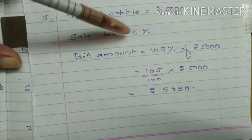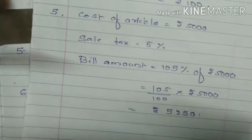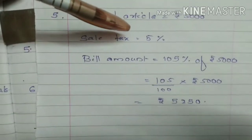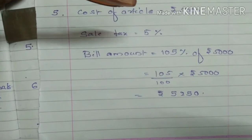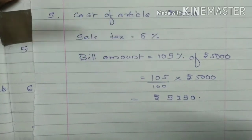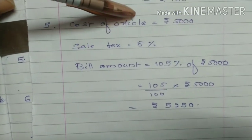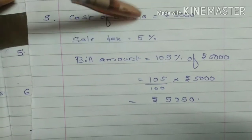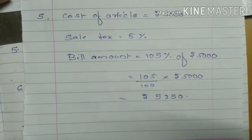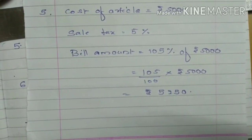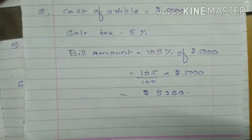Suppose if it is Rs. 100, we have to pay Rs. 105. That means Rs. 5 extra we have to pay for each Rs. 100. So 5% means Rs. 5 extra for each Rs. 100, and instead of Rs. 100, you pay Rs. 105.